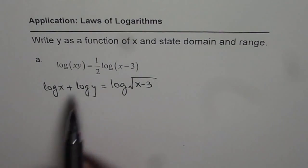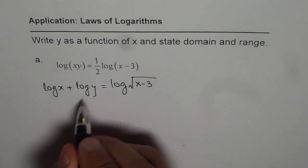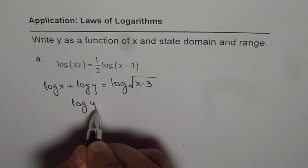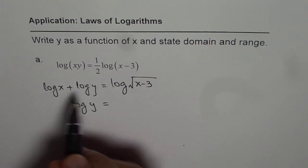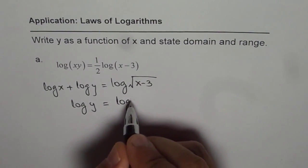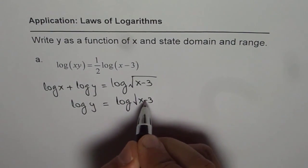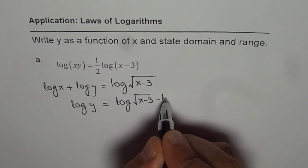Now we need to isolate y. So we get log of y equals, we can take this on the right side. So we get log of square root of x minus 3 minus log of x.